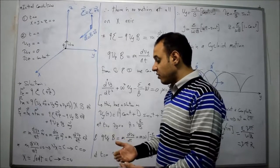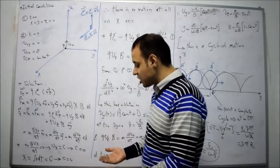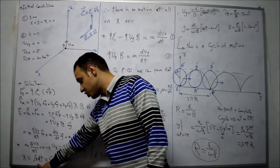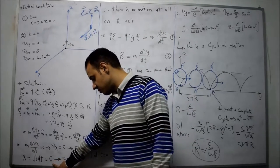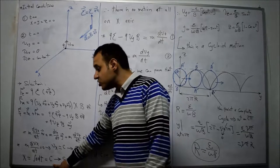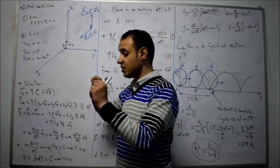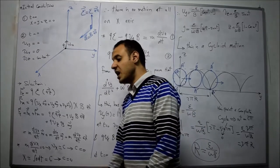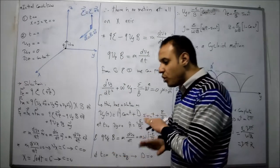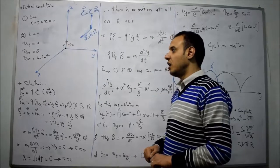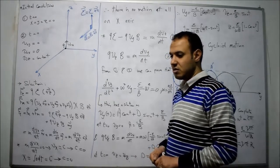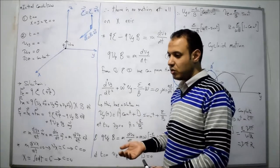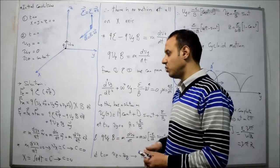Since x is the integral of Vx, and the integral of zero is also a constant, and at t equal to zero the charge was at the origin so x equals zero, the constant is again zero. This means we have no motion at all in the x direction — both x and Vx are equal to zero.